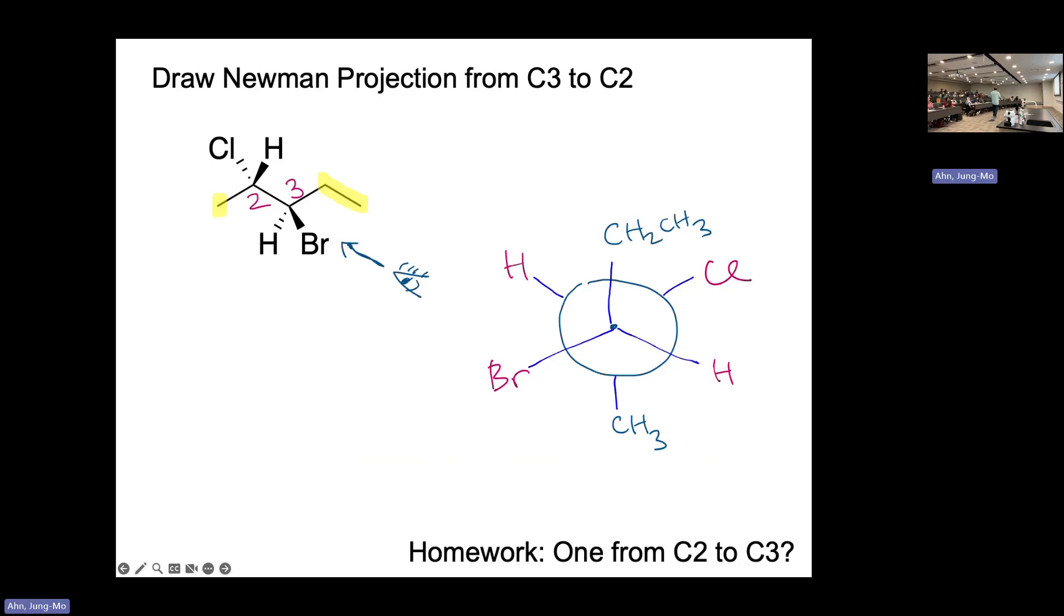And then this projection changes depending on where you see it. So if it's C2 to C3, then you're going to look that way. C2 to C3, you're going to look through this way. Then it will be different shape. So I want you to do that at home.